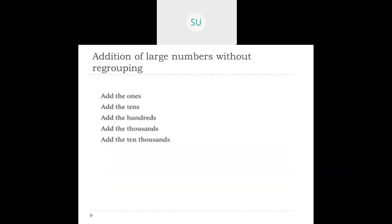In addition without regrouping, when two numbers are given to you to add, first you arrange them in columns according to their place values, then you start adding from the ones. You add the ones, write the answer in the ones column, then add the tens, then hundreds, then thousands, then ten thousands. These are the basic steps to follow to add numbers.